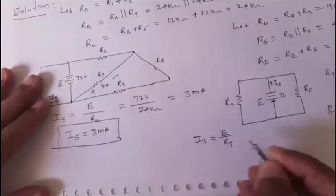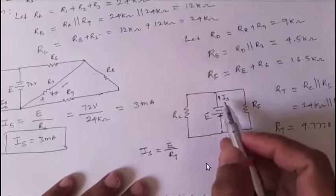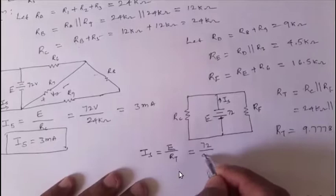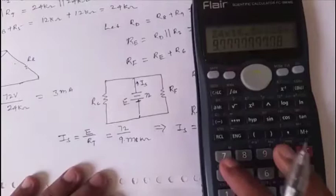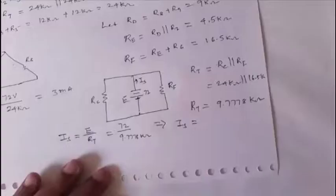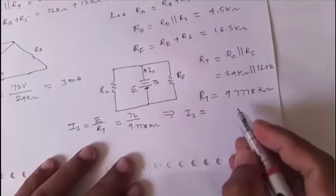Using Ohm's law, the source current is = e / rt = 72 / 9.7778 kΩ = 7.3636 mA.